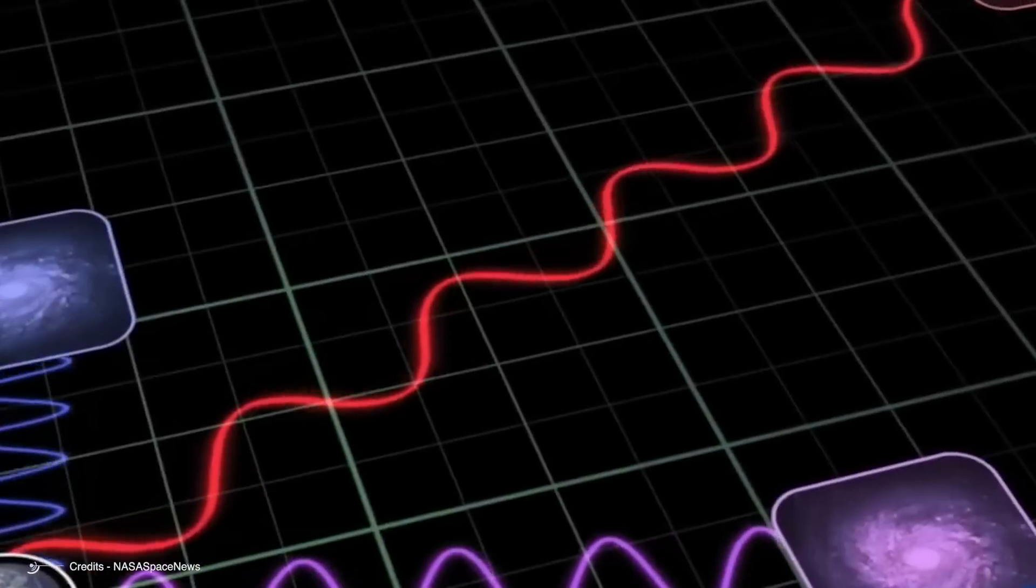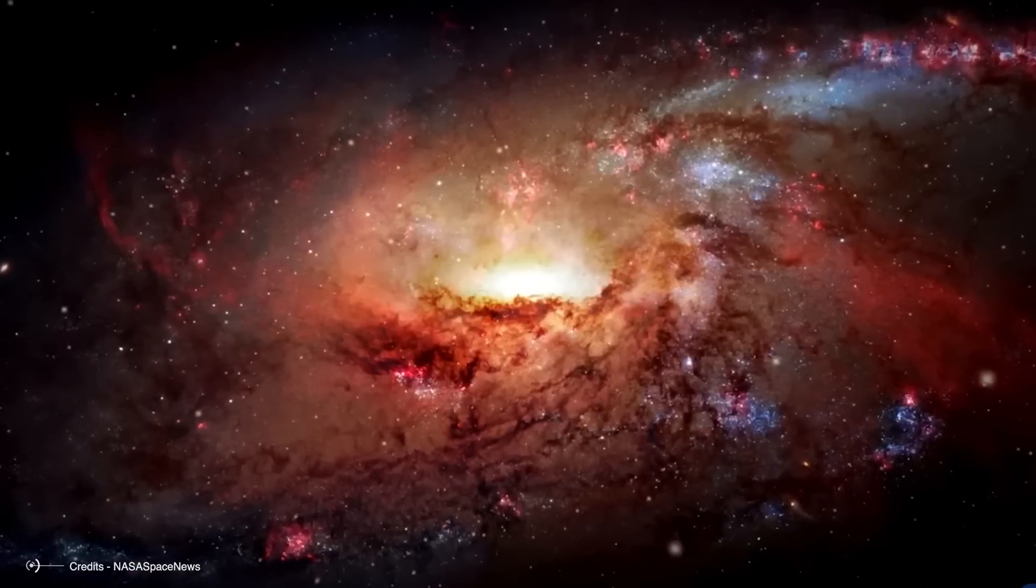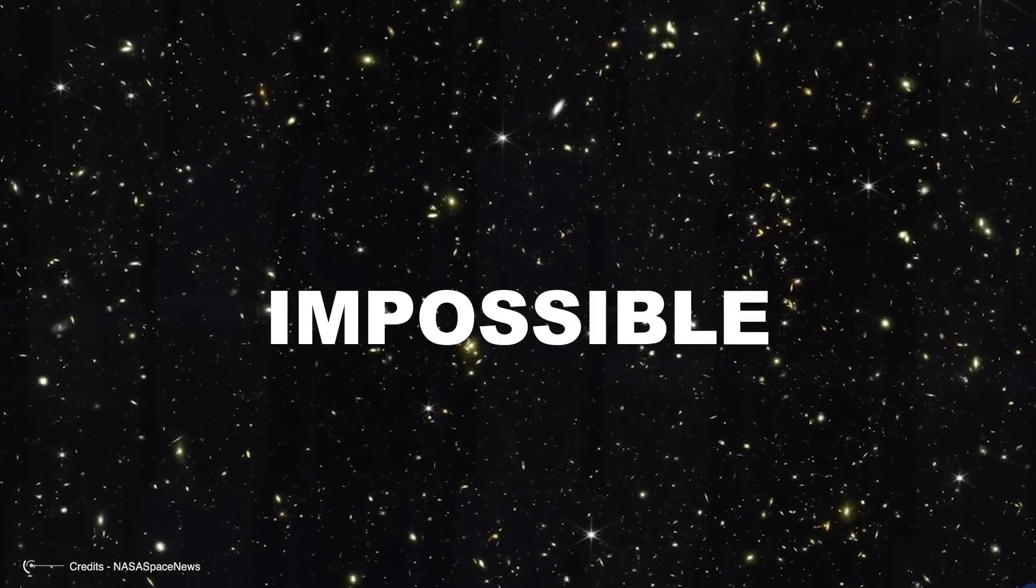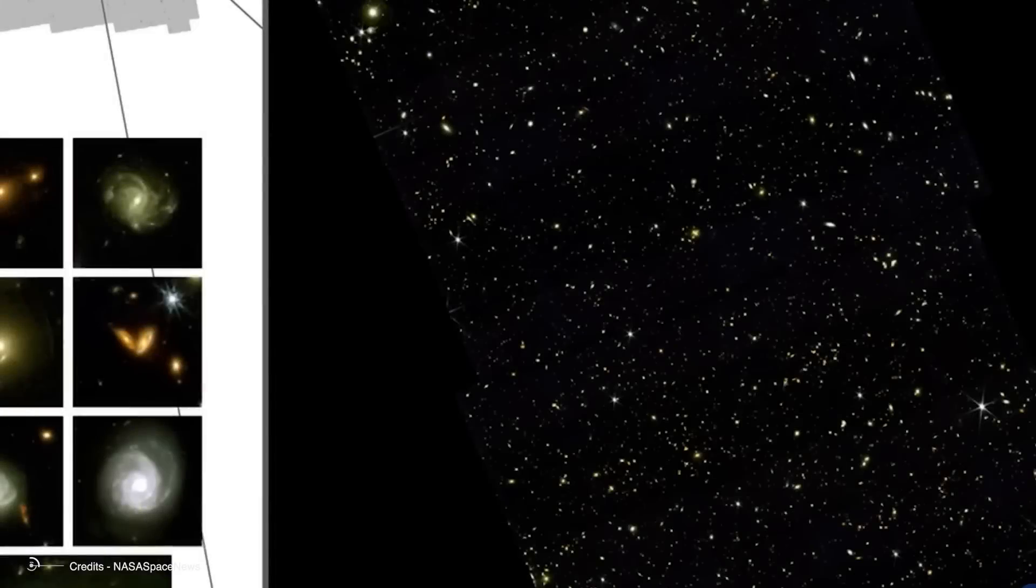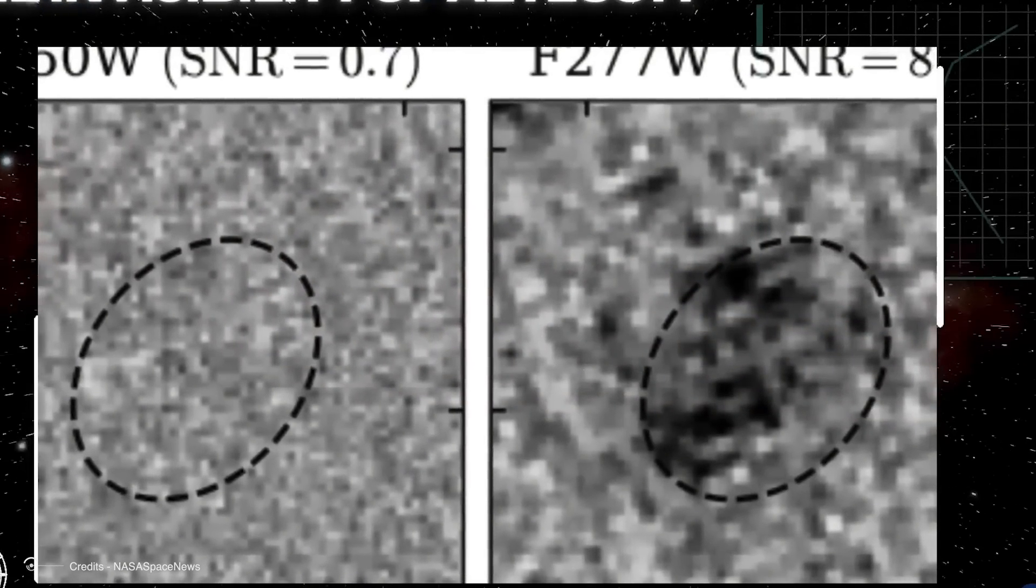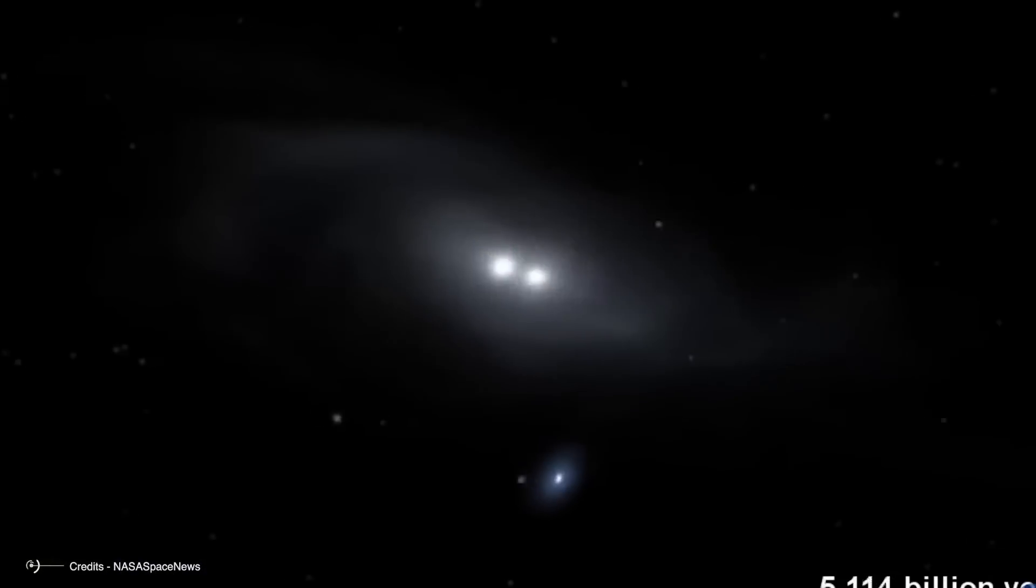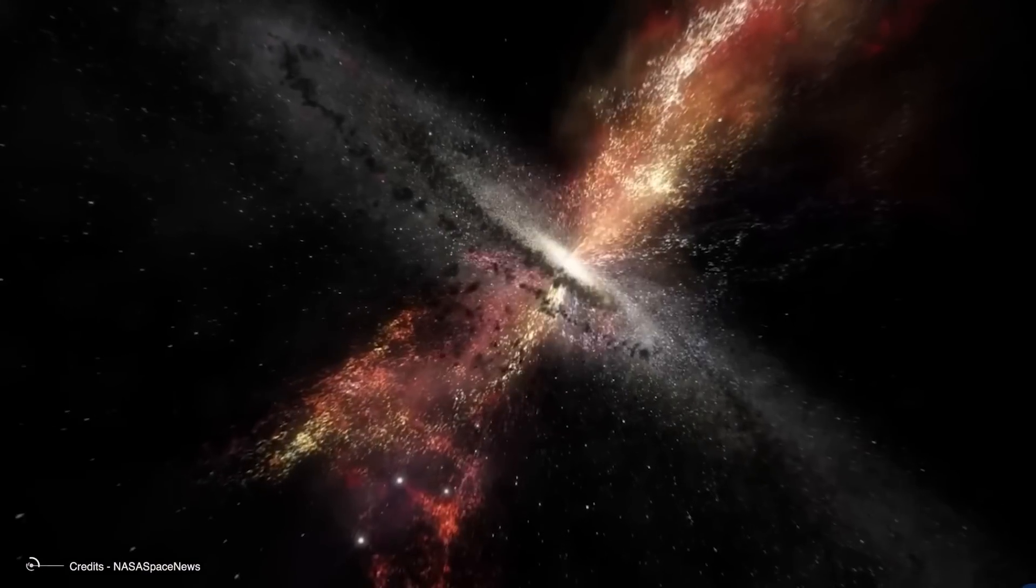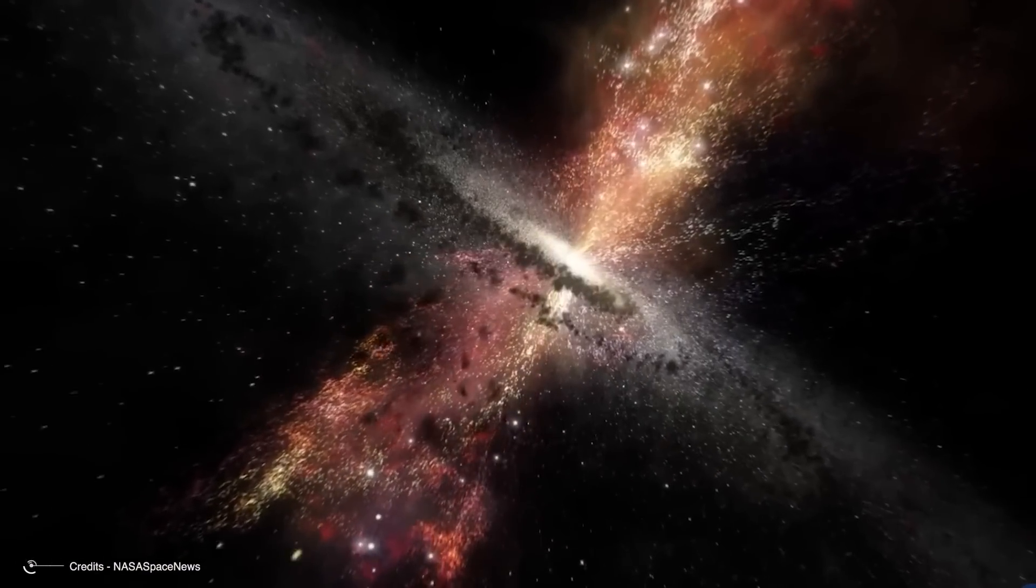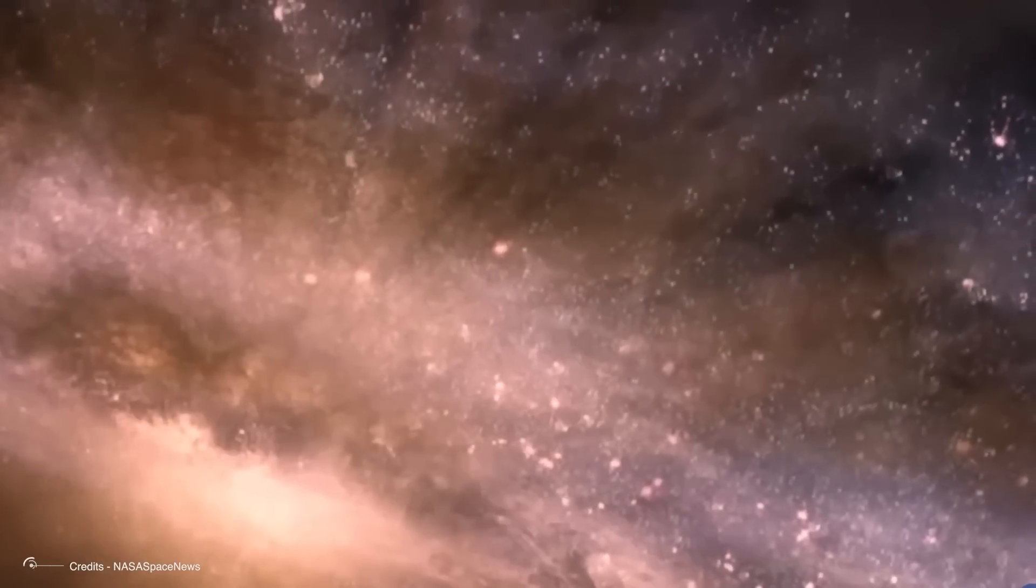To produce these galaxies so quickly, you almost need all the gas in the universe to turn into stars at nearly 100% efficiency. And that's, in scientific terms, impossible. Scientists are still scratching their heads, but a couple of theories have emerged to explain these universe breakers. One possibility is that they might not be massive galaxies at all, but rather quasars, incredibly bright galactic nuclei powered by supermassive black holes. Another theory suggests that these galaxies might have undergone bursty star formation, where groups of stars suddenly spring to life in rapid bursts, rather than through the slow and gradual process we typically see. While these theories help, they still don't fully explain how these galaxies could be so massive, even if the stars formed at an extraordinary rate.